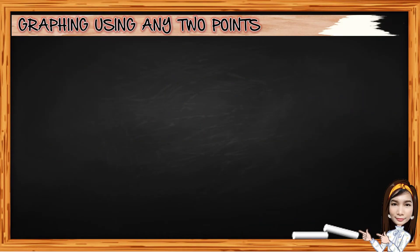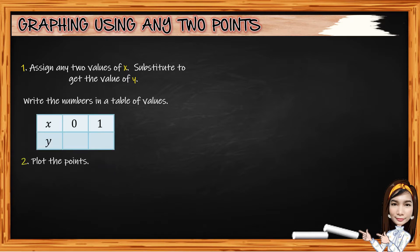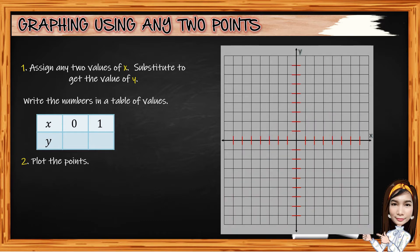First, graphing using any two points. For number 1, assign any two values of x, then substitute into the given equation to get the value of y. Write the numbers in a table of values. Second, plot the points on the Cartesian plane — the first point with coordinates x₁, y₁ and the second with x₂, y₂. And for the last, connect the points using a straight line. So, we have the graph using any two points.